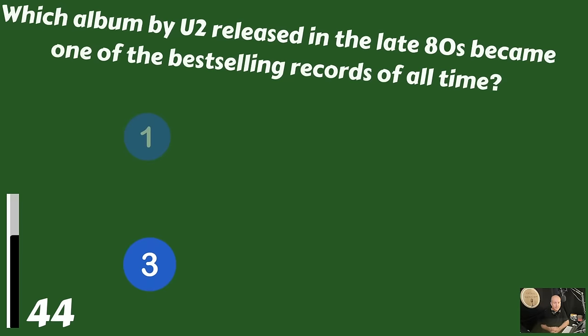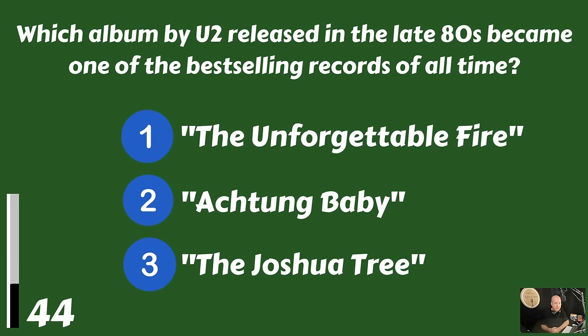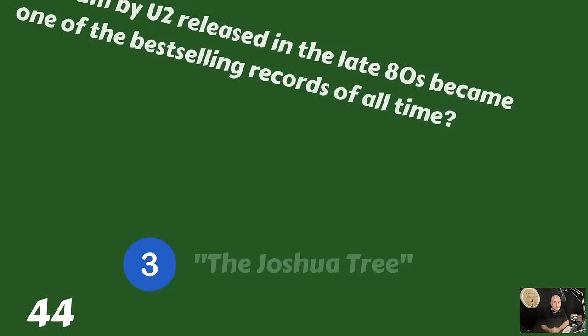Which album by U2 released in the late 80s became one of the best-selling records of all time? The Unforgettable Fire, Achtung Baby, or The Joshua Tree? That would be The Joshua Tree.